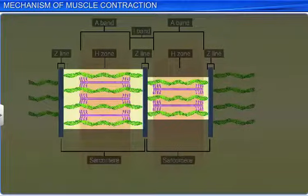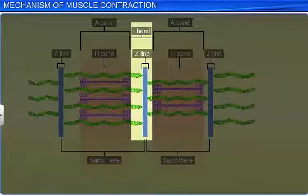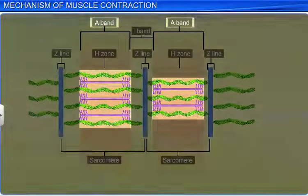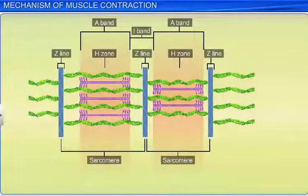During the contraction, the I-bands are reduced, whereas the A-bands retain their length. Interestingly, the filaments do not change in length, but merely slide over one another during a contraction.